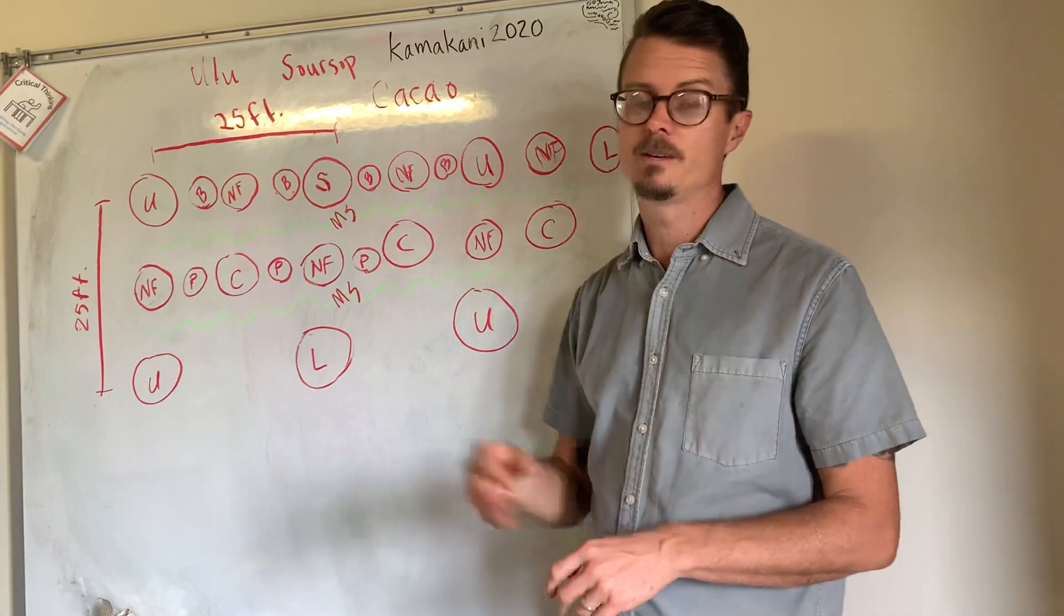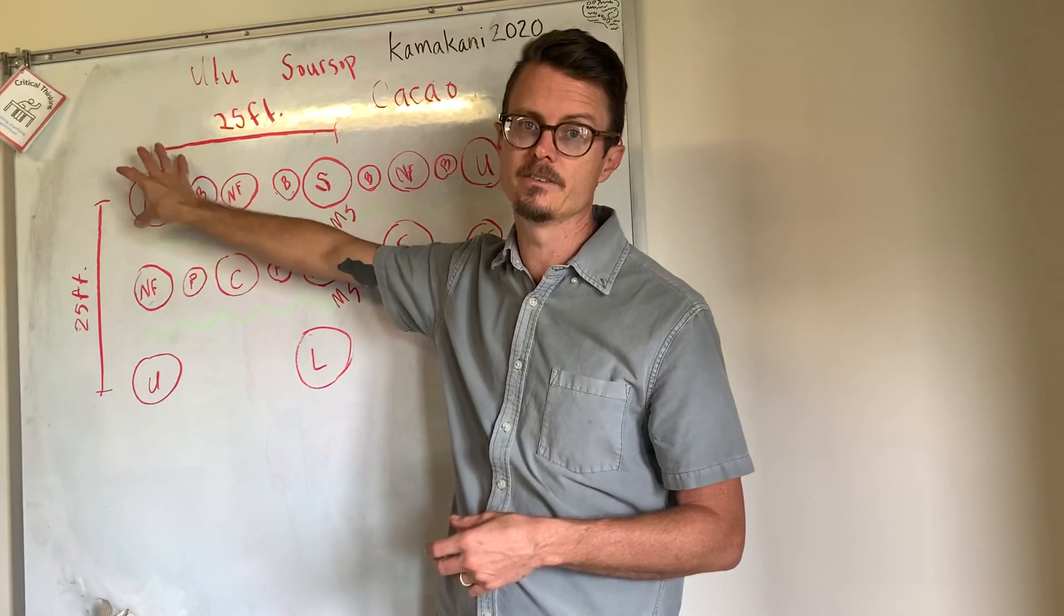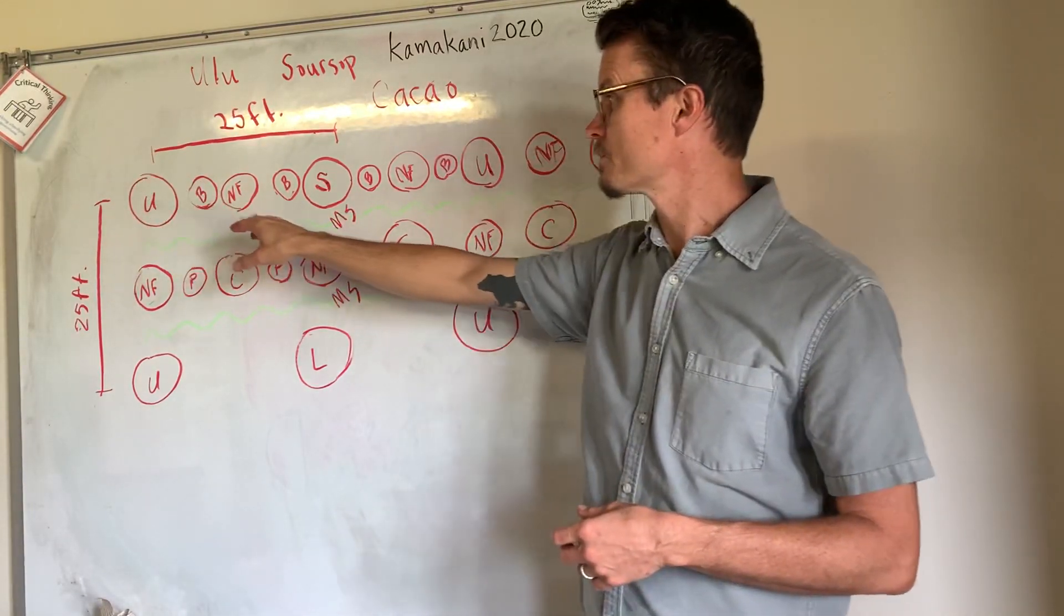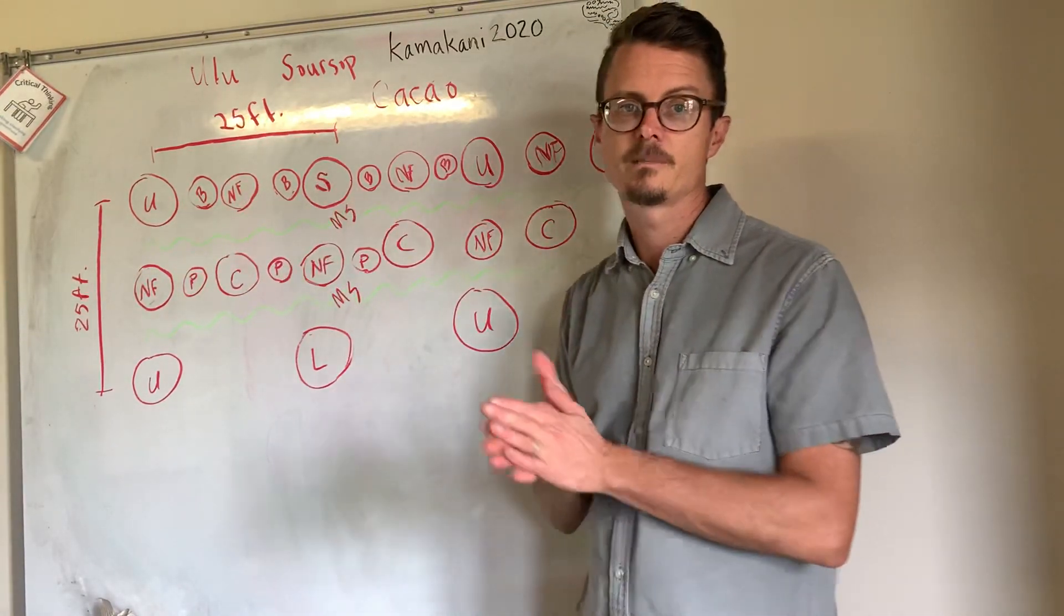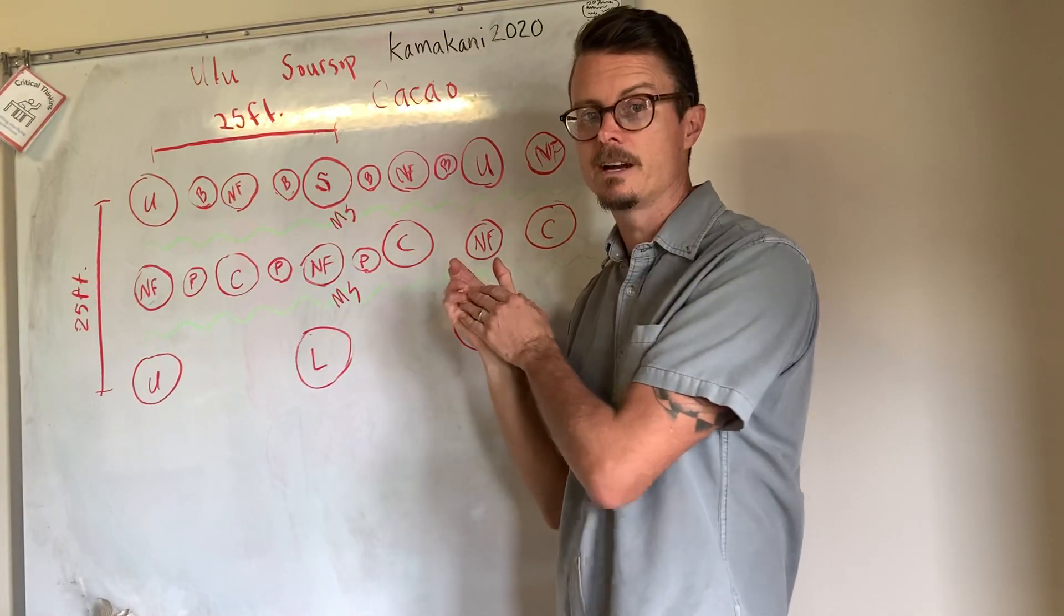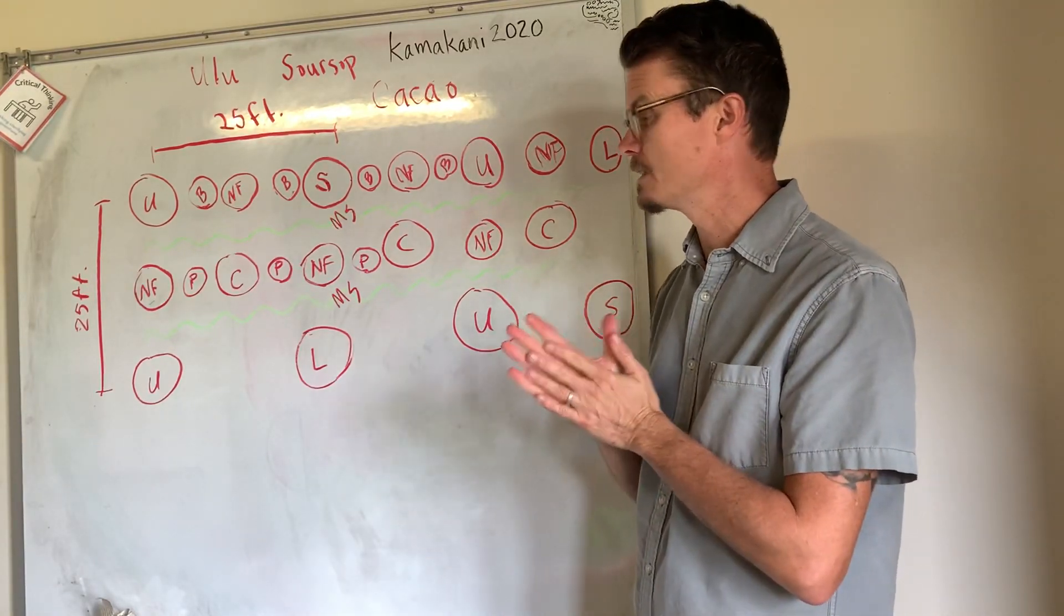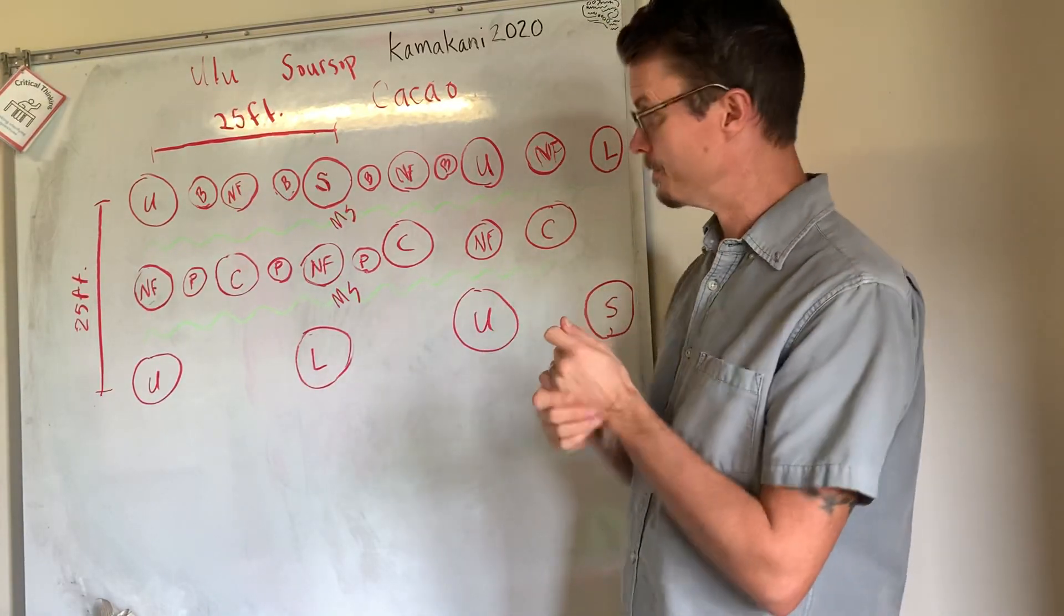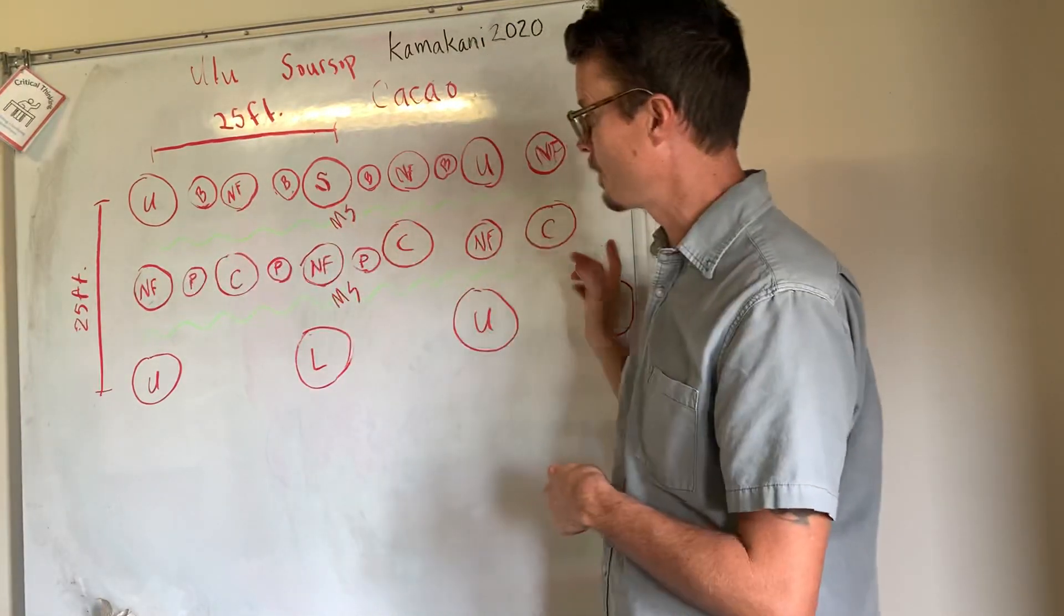We've also got pigeon pea. We're going to be putting a ton of pigeon pea in here, and pigeon pea is actually what's going to initially give us some shade around our young fruit trees. Some of these fruit trees will come in as seedlings like the ulu, but the soursop, the longan, I think I'm going to experiment with trying to get them to go from seed right in the ground. So again, we need that shade, that protection, especially because when we come into summer it's just going to be super intense sun.